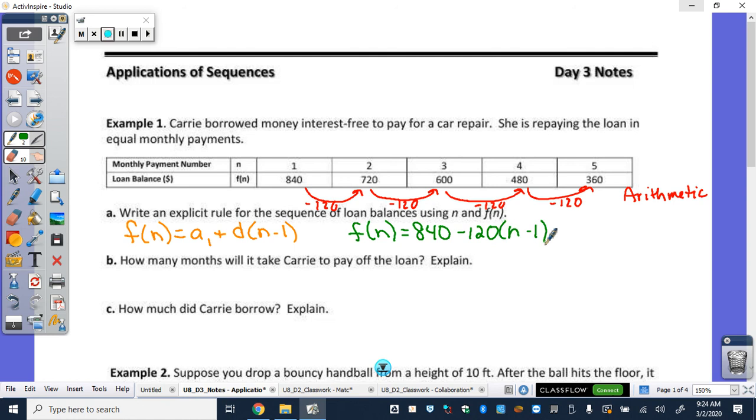Because again, we're just writing a generic explicit formula. So go ahead, distribute your negative 120. Combine your like terms. Let's see what we get. Hopefully we got negative 120n plus 960 in the simplicity.